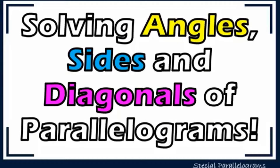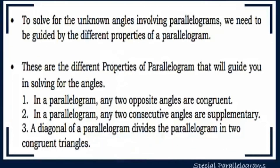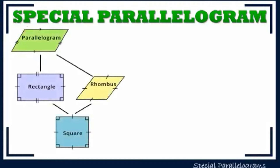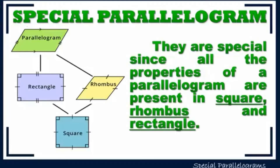Let's have a review on solving angles, sides, and diagonals of parallelograms — that was our previous topic. To solve for unknown angles, we need to be guided by the different properties of a parallelogram. These properties include: any two opposite angles are congruent, any two consecutive angles are supplementary, and the diagonals divide the parallelogram into two congruent triangles. Rectangle, rhombus, and square are special parallelograms since all properties of a parallelogram are present in them.